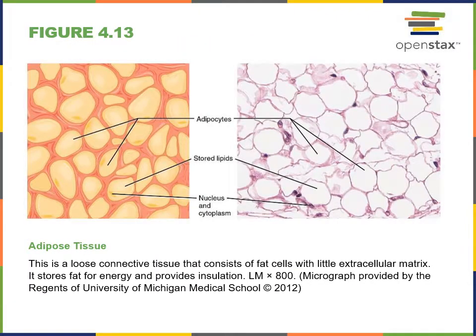Adipose tissue is another type of connective tissue proper where the predominant cell type is the adipocyte, which functions to store fat. The cytoplasm is filled with fat globules and the nucleus is pushed off to the side of the adipocyte. The matrix is generally the same as in areolar connective tissue, with a variety of extracellular matrix fibers and a ground substance with the consistency of maple syrup.